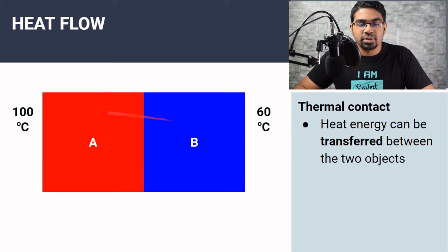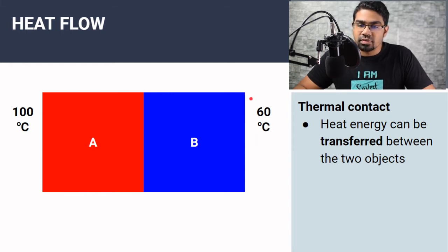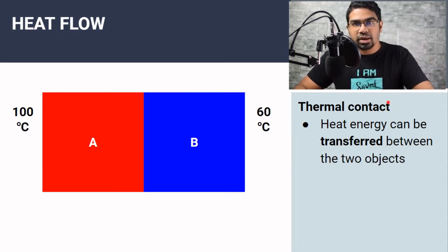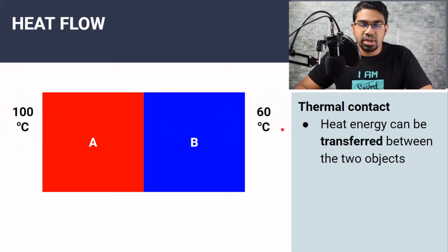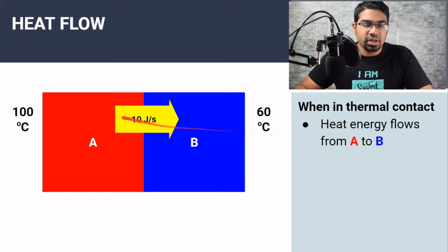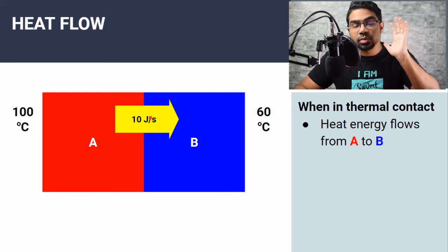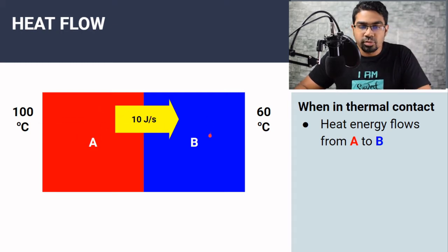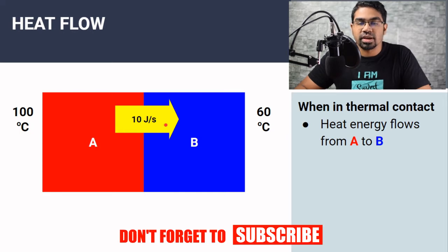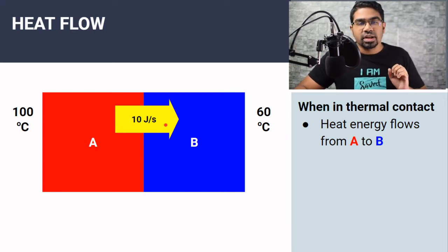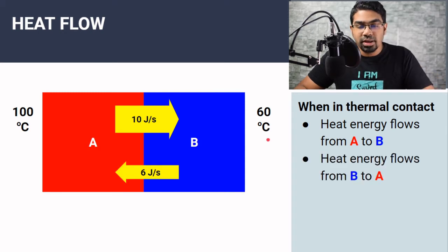When two objects are in thermal contact, let's look at this example. Here we have object A with a temperature of 100 degrees Celsius and object B with a temperature of 60 degrees Celsius. Heat energy is able to flow between them. We automatically expect heat to flow from A to B because A is at a higher temperature than B, and this is true. So let's say heat flows from A to B at a rate of 10 joules per second.